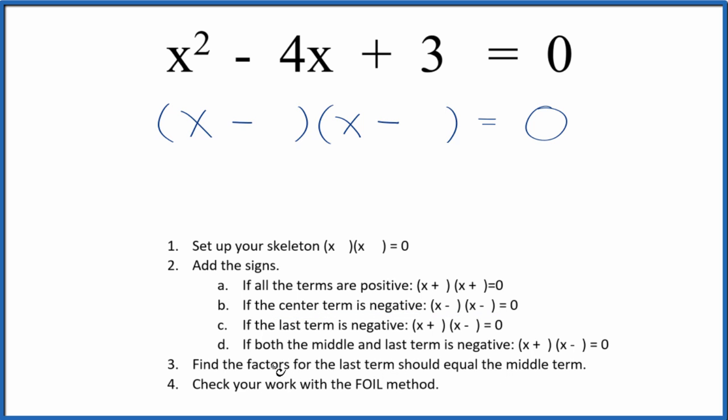So now we want to find the factors of that last term, and they should add up to give us the middle term, this negative 4x here. So the factors for 3, that's just 1 times 3. So we could put a 1 and a 3 in, and negative 3, negative 1, that does equal negative 4.